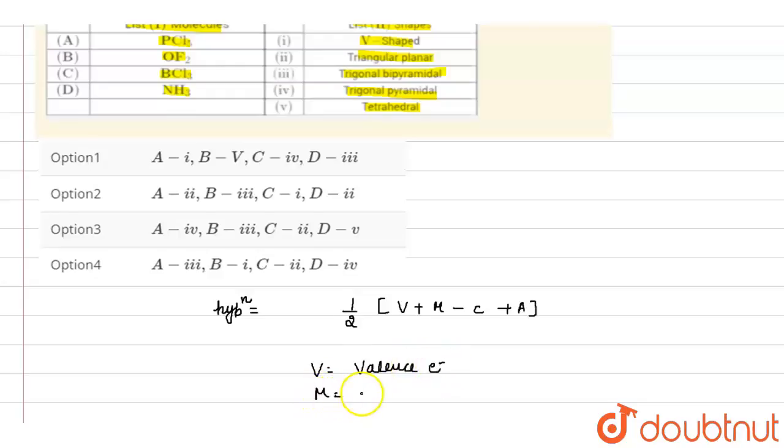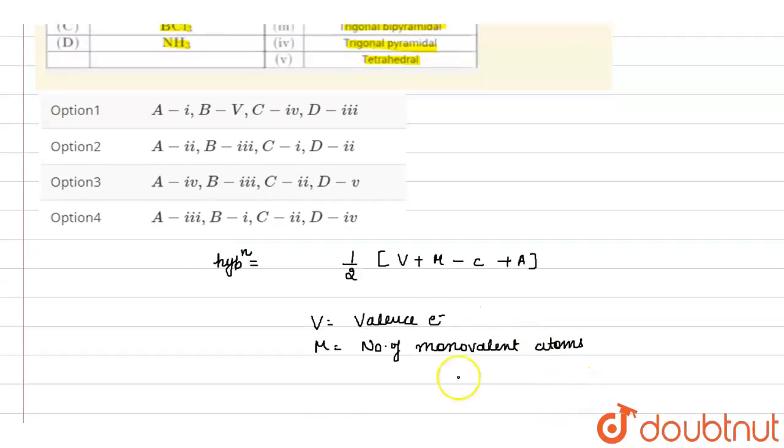M signifies number of monovalent atoms, C signifies cation, and A signifies anion.